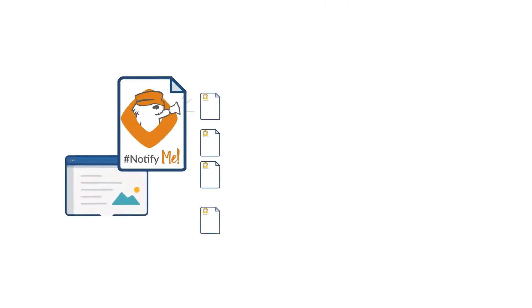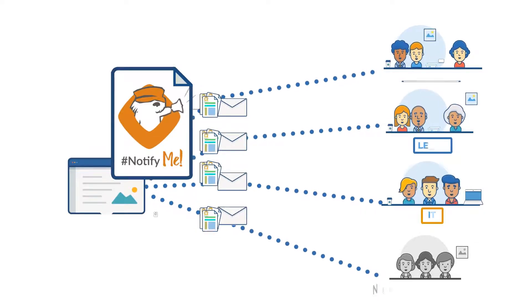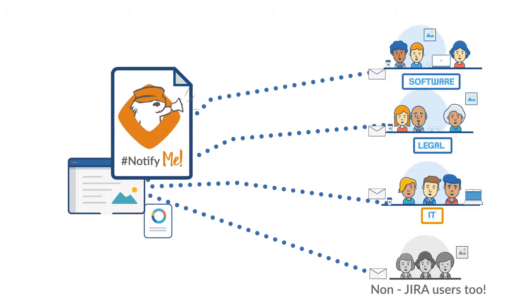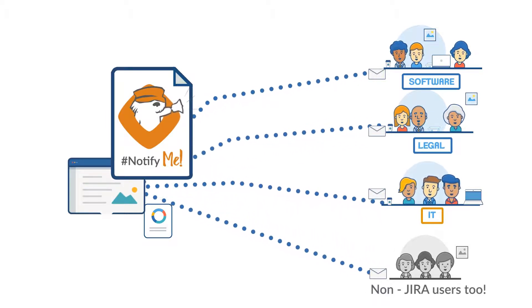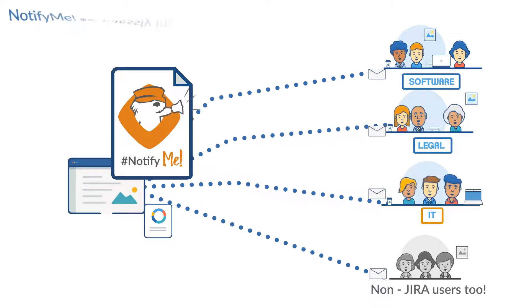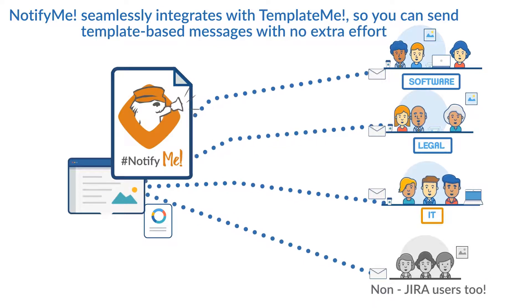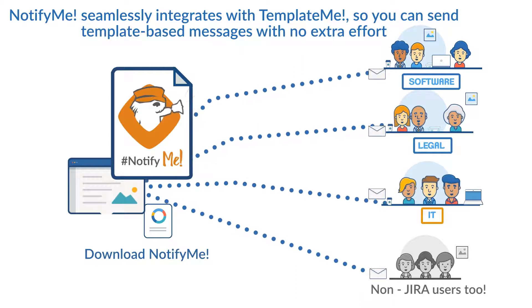You will be able to create custom HTML messages from Jira issues thanks to a great WYSIWYG editor. Insert images, format text, search for recipients in a user-friendly interface, and send your email to anyone you want — even to non-Jira users. Now comes the best part: Notify Me seamlessly integrates with Template Me, so you can send template-based messages with no extra effort.